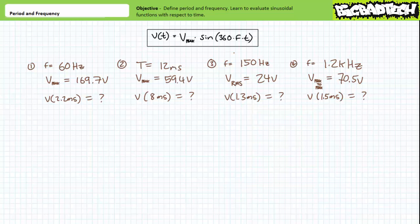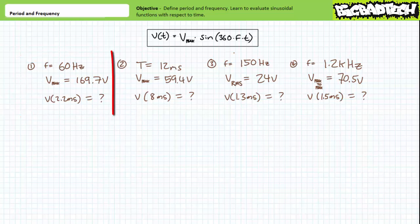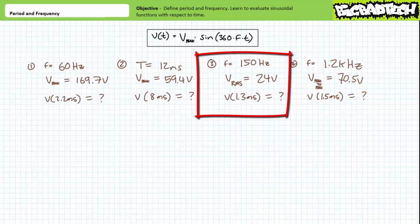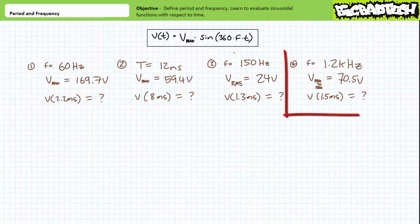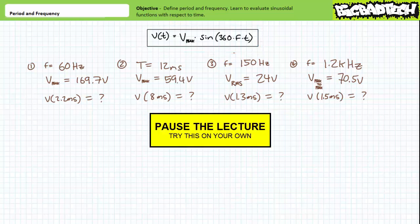Put your understanding of time-variant sine functions to the test. Be cautious — there are a couple of tricky ones. Example 1: frequency of 60 Hz, peak voltage of 169.7 V, find output voltage at 2.2 ms. Example 2: period of 12 ms, peak voltage of 59.4 V, find voltage at 8 ms. Example 3: frequency of 150 Hz, effective (RMS) voltage of 24 V — note this carefully — find voltage at 1.3 ms. Example 4: frequency of 1.2 kHz, peak-to-peak voltage of 70.5 V, find voltage at 1.5 ms. Derive the V(t) formula for each before solving. Pause and give it your best shot.